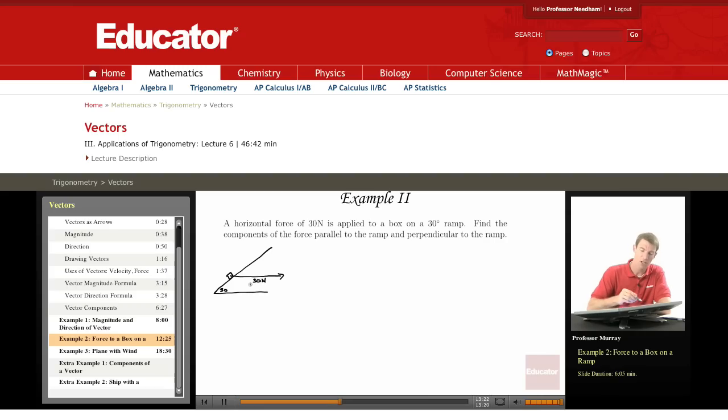So there's my horizontal force and I know that that's 30 newtons. Now what I want to do is find the components of the force parallel to the ramp and perpendicular to the ramp. So I want to break this vector up into two pieces.